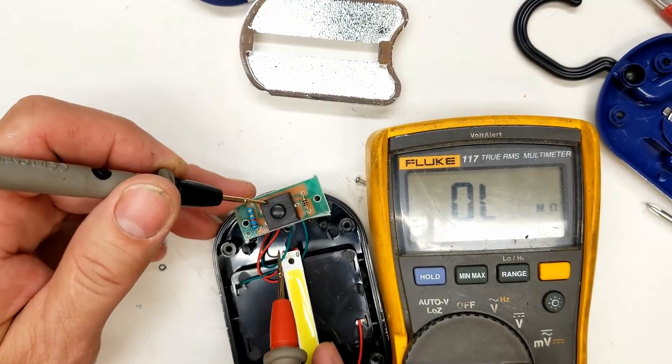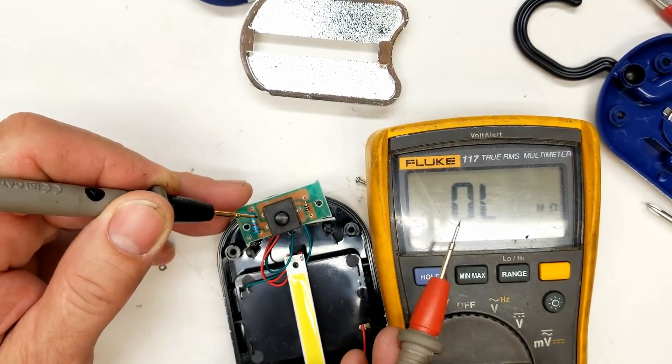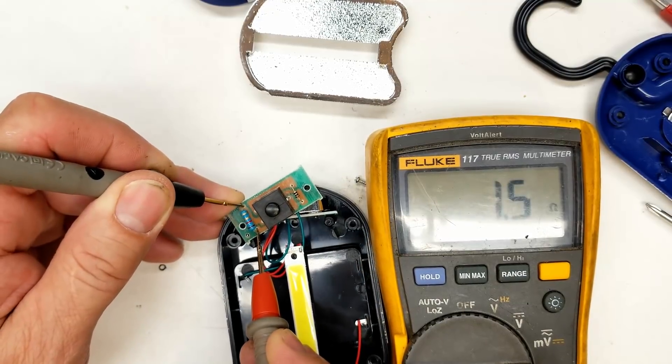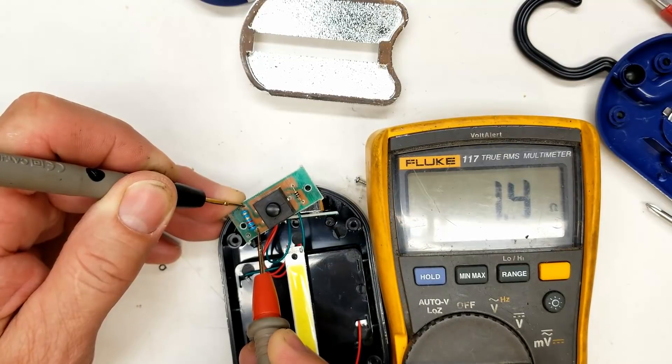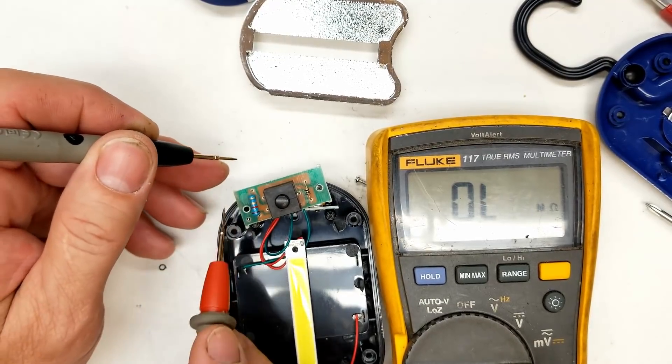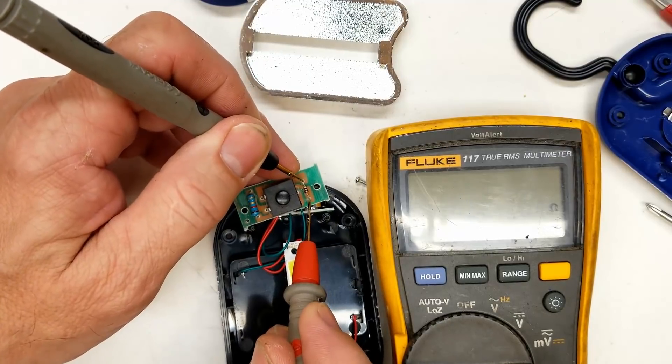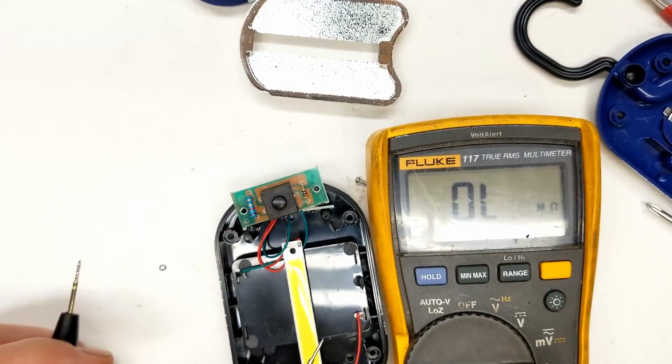This one should be 1.2 ohms. So on a low value resistor like this, let's zero out our leads by sharing them together. So we're going to add 0.2 ohms to whatever's on the screen. There we go. I got 1.5 minus 0.2 is 1.3 ohms, definitely within the realm of tolerance. So the 10 ohm resistor reads 10.0, so it's actually 9.8 ohms.